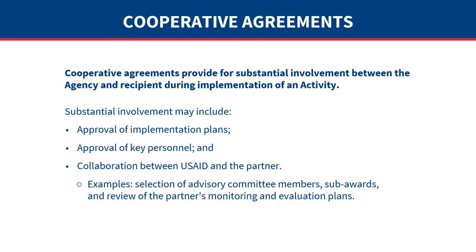Substantial involvement may include approval of implementation plans; approval of specified key personnel, generally no more than five leadership positions or 5% of employees working under the award; and collaboration between USAID and the partner, which the agreement officer may authorize when USAID's technical knowledge might help recipients succeed. Examples of joint participation include selection of advisory committee members, establishment of sub-awards, or review of a partner's monitoring and evaluation plans. For more information, see ADS Chapter 303, Section 311.